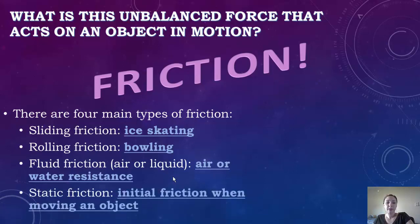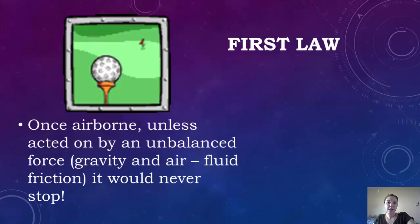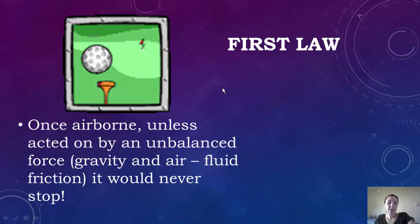So let's look at a golf ball for an example. When you hit the golf ball off the tee, unless acted on by an unbalanced force, it would never stop. But since you have gravity and you have air, that's going to act as fluid friction and it's eventually going to stop and fall to the ground.